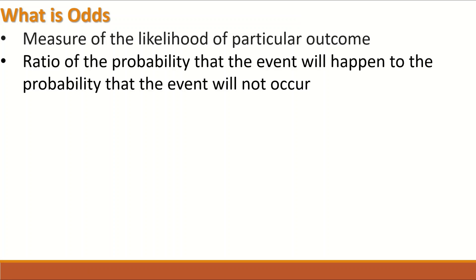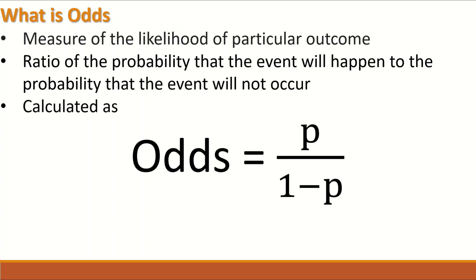Odds measure the likelihood of a particular outcome. It is the ratio of the probability that the event will happen to the probability that the event will not occur. It is calculated as the probability of the event occurring divided by the probability of the event not occurring — where the probability of occurring is p, and not occurring is 1 minus p, or q.